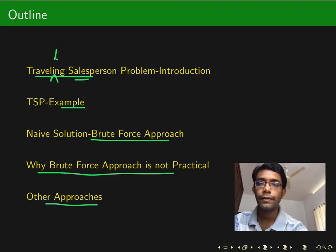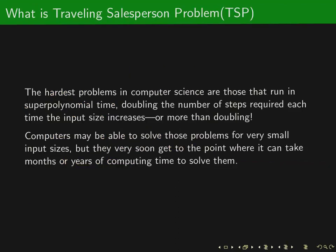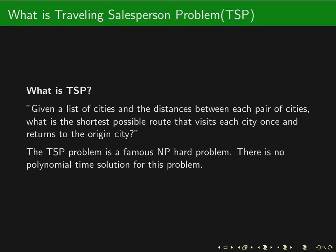The Traveling Salesman's Problem is regarded as a very hard problem in computer science because coming up with an exact solution for the TSP is very hard when the input size is very large. A typical computer might take months or years to find the exact solution for a TSP problem. Now let us understand what exactly is a TSP problem.